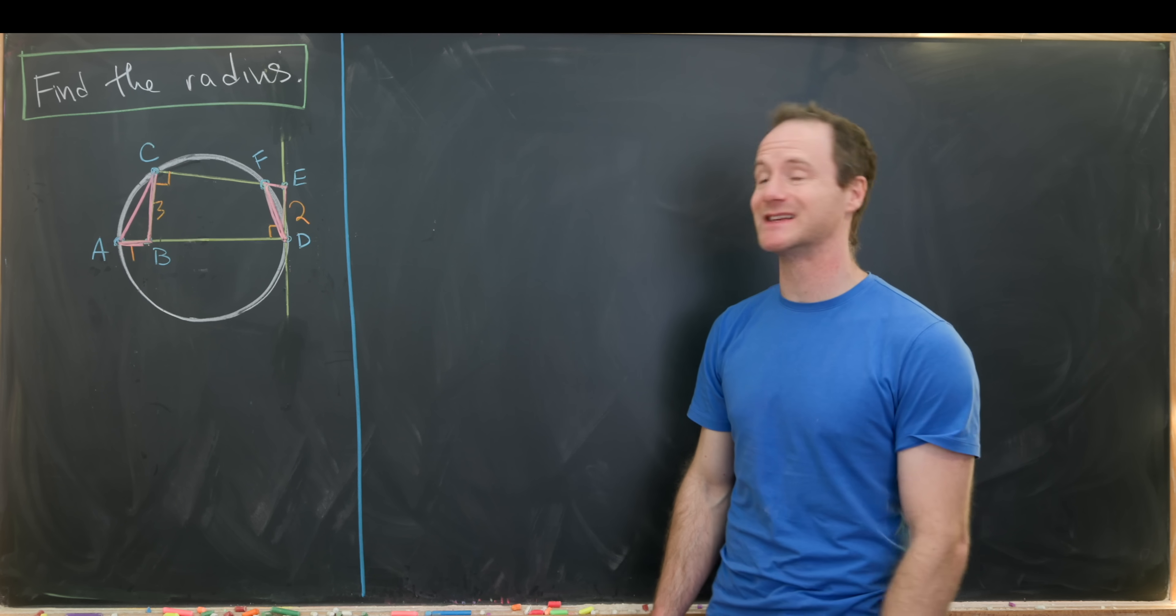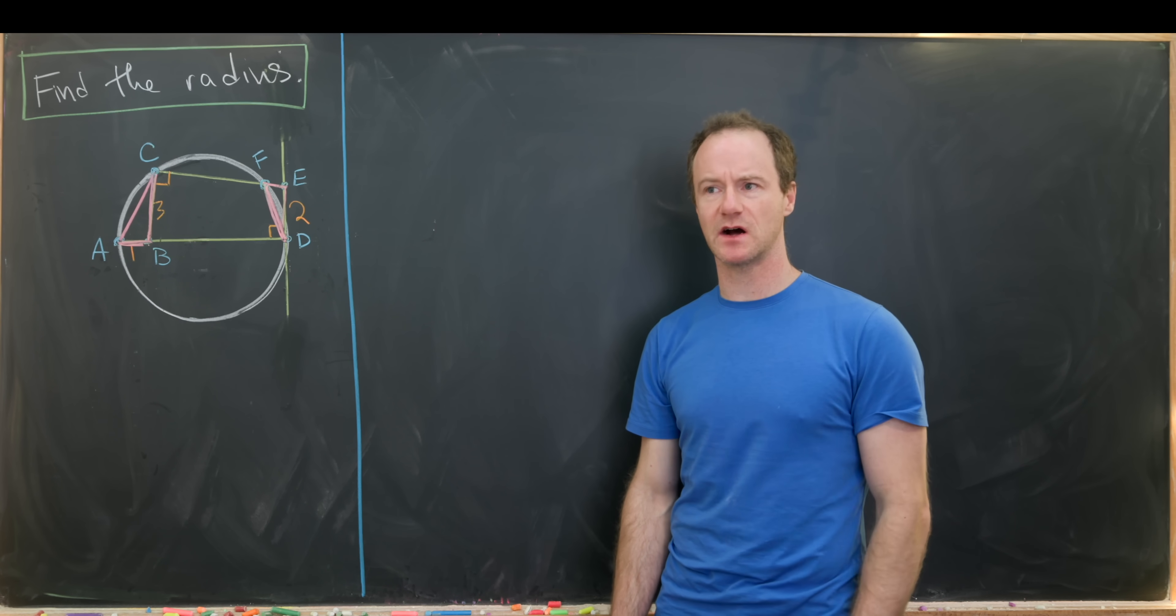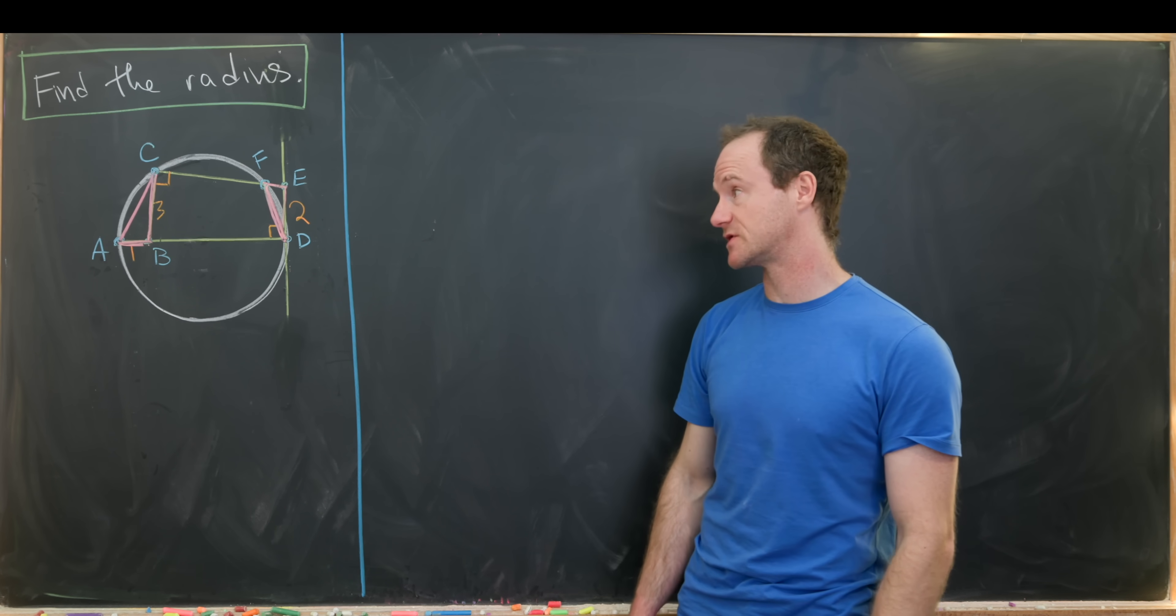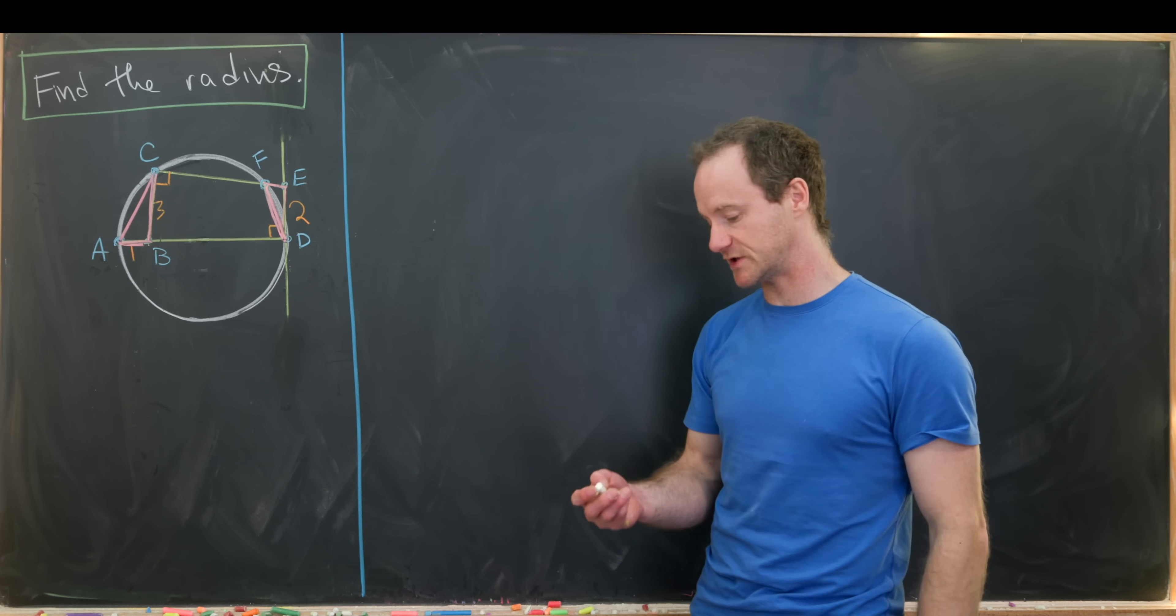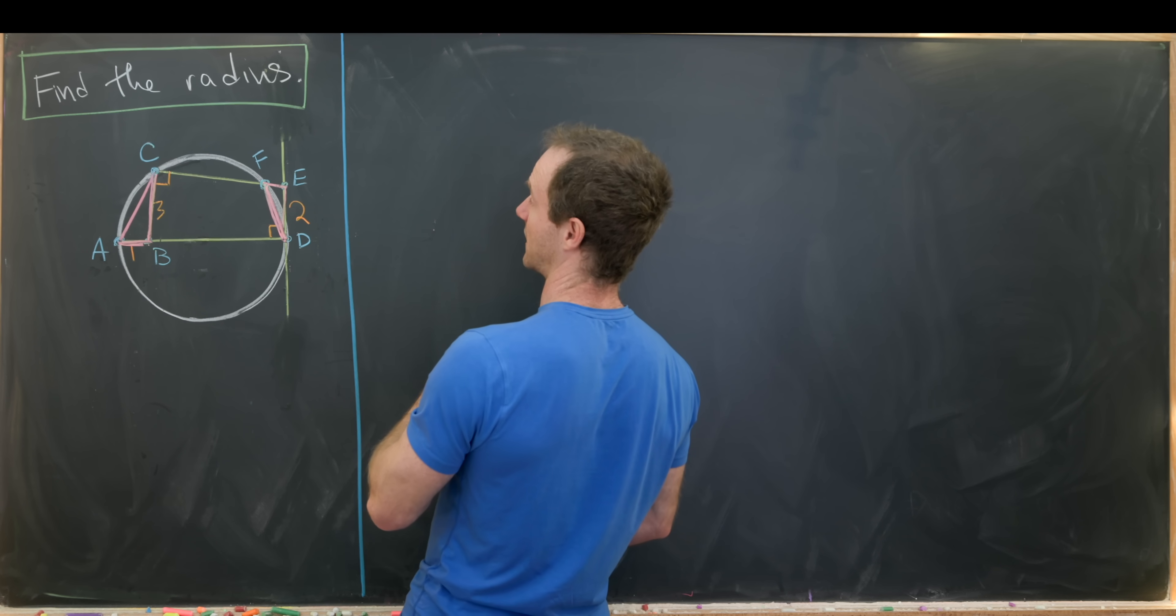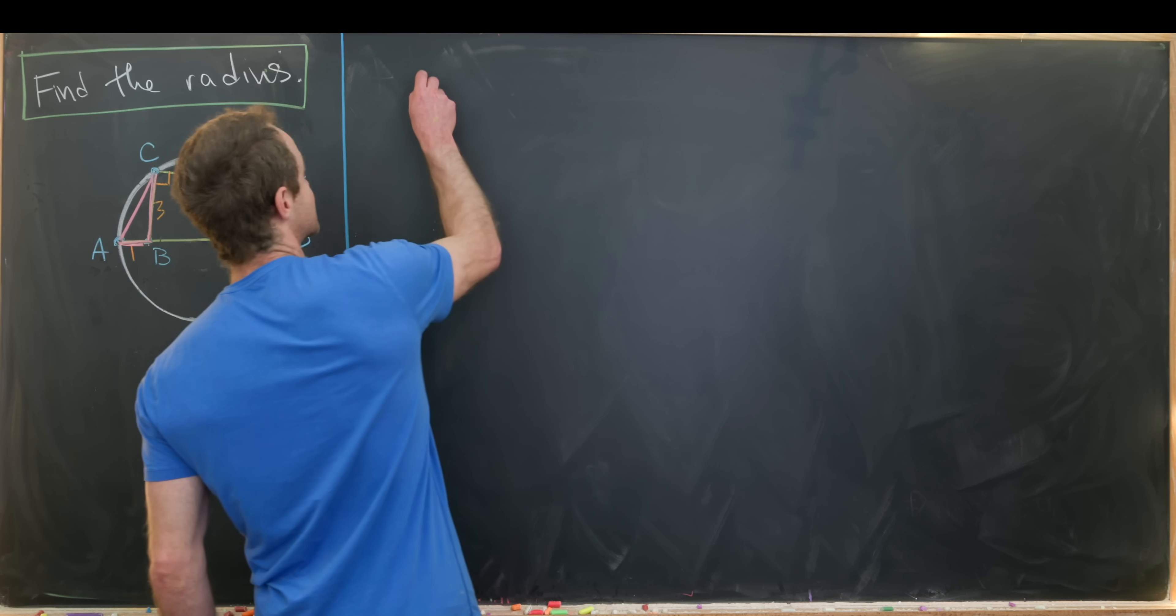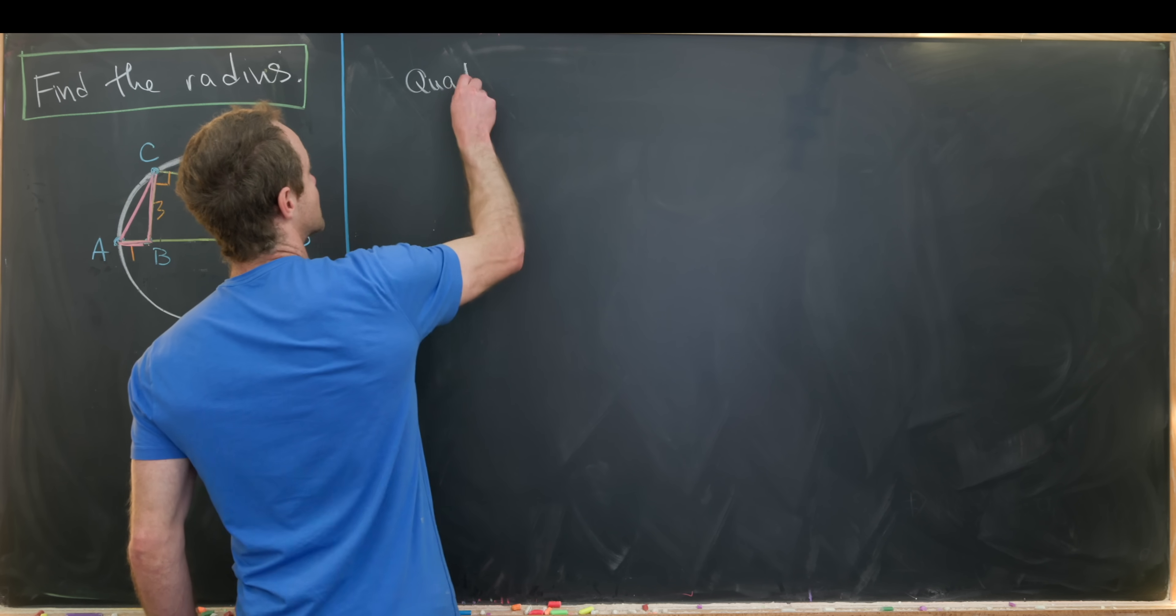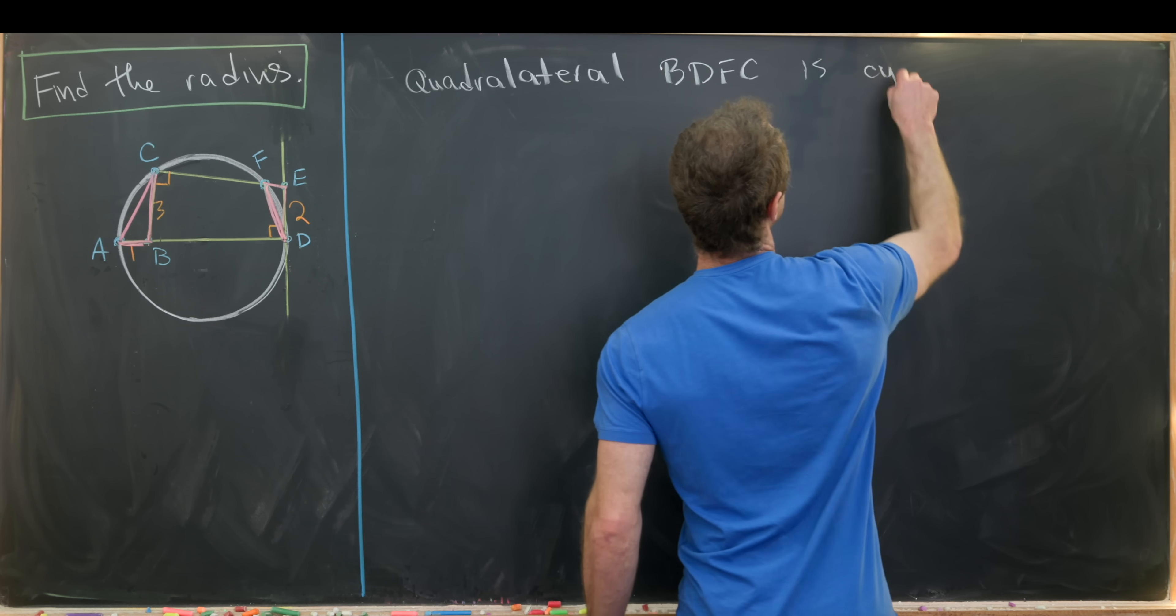And now notice that upon creating those two triangles, I've also created something called a cyclic quadrilateral. And a cyclic polygon is a polygon that's inscribed in a circle. So a cyclic quadrilateral will be a quadrilateral inscribed in a circle. And the quadrilateral that I've made is B, D, F, C. So quadrilateral BDFC is cyclic.